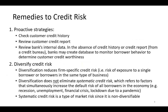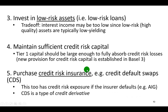Some remedies that banks can consider would include proactive strategies — doing their due diligence and not falling into the trap they did during the 2007 mortgage crisis and the subsequent 2008 global financial crisis. Also, diversifying credit risk, meaning they would not want to concentrate their loans in one customer, one aspect of business, or one industry. Another option is investing in low-risk assets, which unfortunately would be low-yielding, primarily government loans.